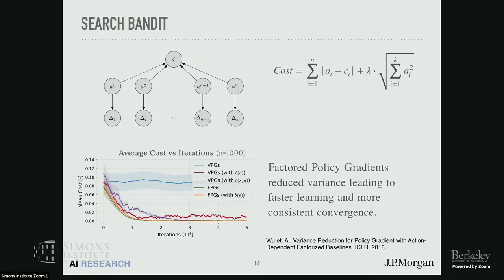We did some experiments on the search bandit problem, which has been used in other papers and is a simple problem that helps study the scaling of these kinds of algorithms well. In this problem, the goal is for the action to locate a coordinate C, and there is also a regularization penalty on the actions. The key takeaway is that factored policy gradients perform really well compared to vanilla policy gradients with state-dependent baselines or even action-dependent baselines. In fact, action-dependent baselines take orders of magnitude more wall clock time to run.